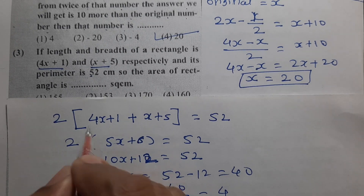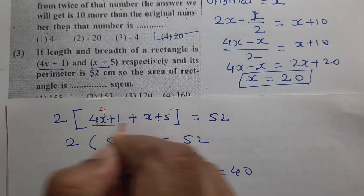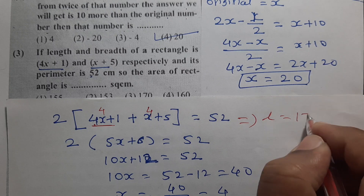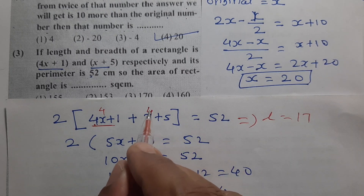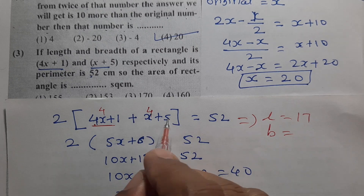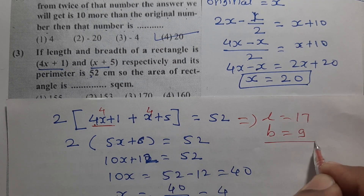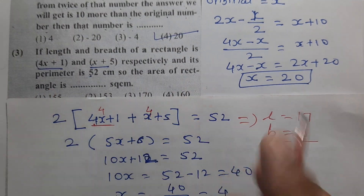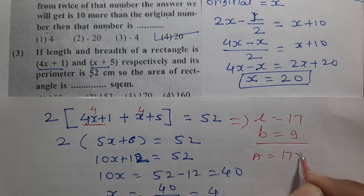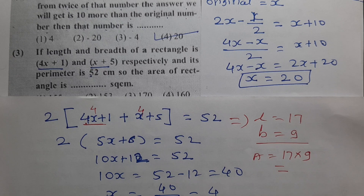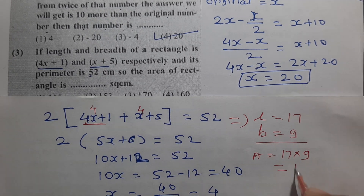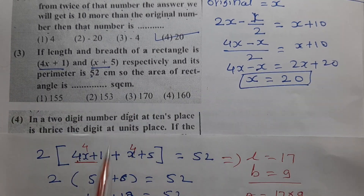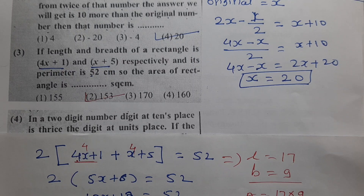With x equals 4: length is 4 into 4 equals 16, and breadth is 4 plus 5 equals 9. The area of the rectangle is length into breadth: 17 multiplied by 9 equals 153 square centimeters. The answer is option number 2.